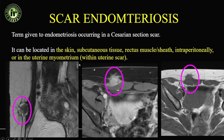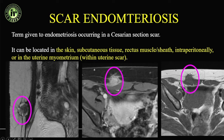Scar endometriosis is easy to find if you take the patient's history — they will point to the site of pain. Placing a vitamin E marker at the scar site will help localize it. Following previous surgery, the anterior abdominal wall typically develops these deposits, which are hypointense on T2, with tiny T1 hyperintensities similar to adenomyosis, speculations, and cyclical pain.